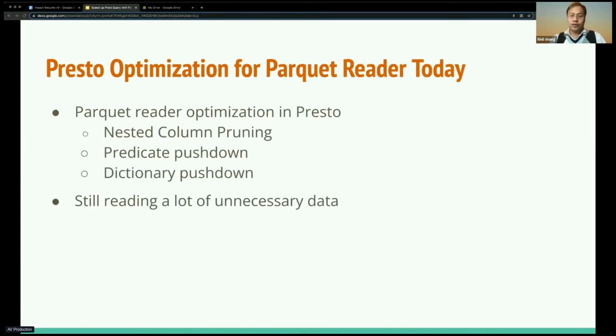So filtering becomes very important. Presto has done a lot of optimization for Parquet readers, like nested column pruning, predicate pushdown, dictionary pushdown, etc. But there's still a lot of data to read.